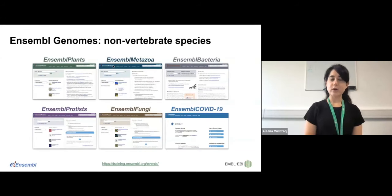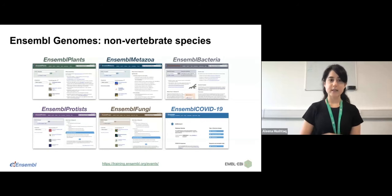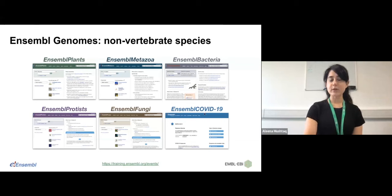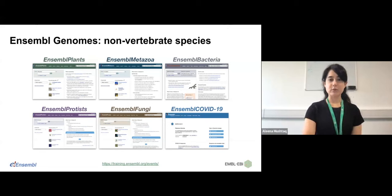If you're interested in non-vertebrate species, we also have Ensembl Genomes, which is our sister site, where you can find different taxa. We have Ensembl Plants, Ensembl Metazoa, a site dedicated to bacteria, protists, fungi, and also a site dedicated to COVID-19 — which is the annotation for the genome of SARS-CoV-2. All of these sites follow the same logic and organization as the main Ensembl site.